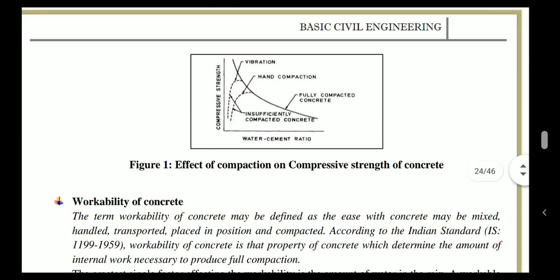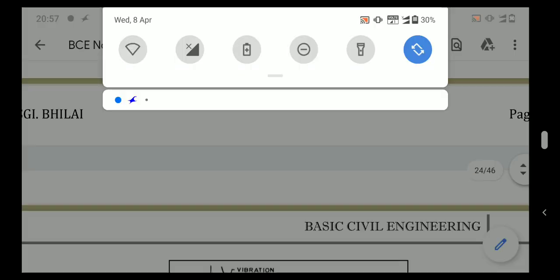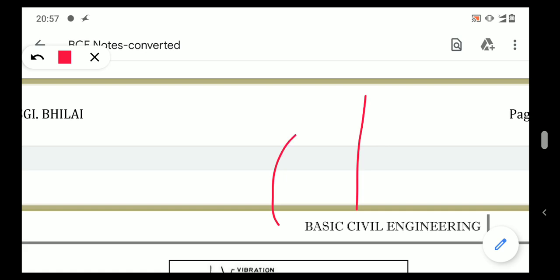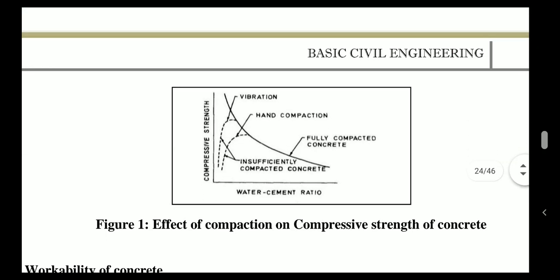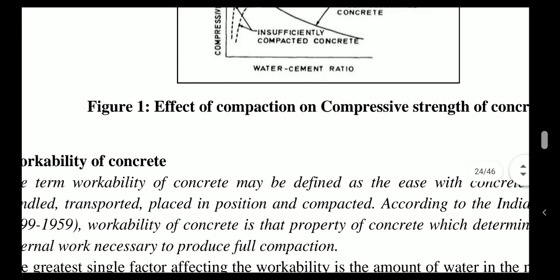As seen from the graph, if you increase the water-cement ratio, the compressive strength decreases. The graph shows that if you are compacting with a vibrator, the water-cement ratio needed is very low. If you use hand compaction comparable to mechanical vibration, more water-cement ratio is needed, and for normal hand compaction even more water-cement ratio is required.